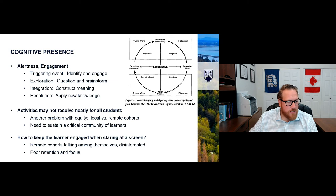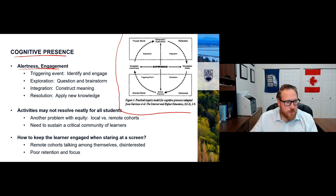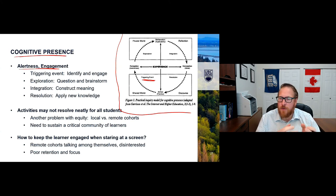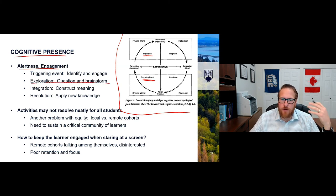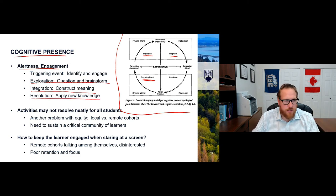Next is cognitive presence — we think of this as alertness or engagement with the course. Garrison describes a cycle: starting with a triggering event — often from the instructor asking students to think about something. Then exploration, where they question and brainstorm. Then integration, where they try to construct some sort of meaning. And finally resolution, where they apply the new knowledge. If they can complete the cycle, they have a better understanding of the material.